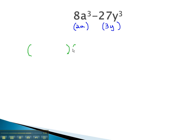These will now factor to our binomial and trinomial factors. The binomial fills in quickly with those roots we just found, 2a and 3y. To fill in the trinomial, we start by squaring the first term. 2a squared is 4a².